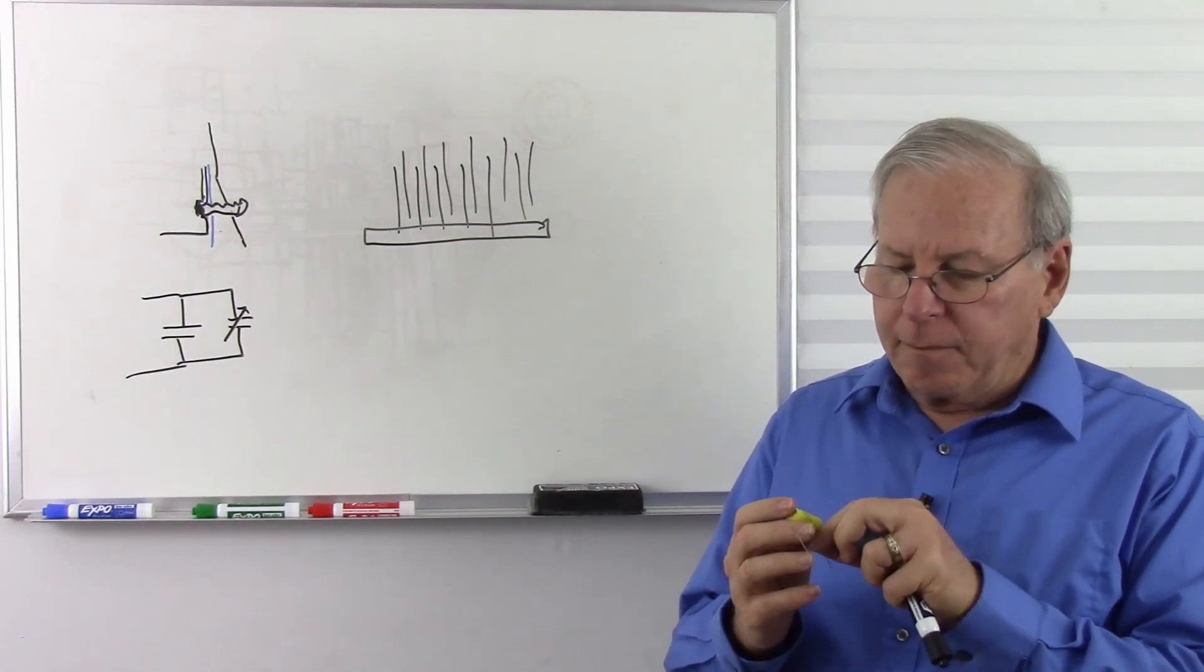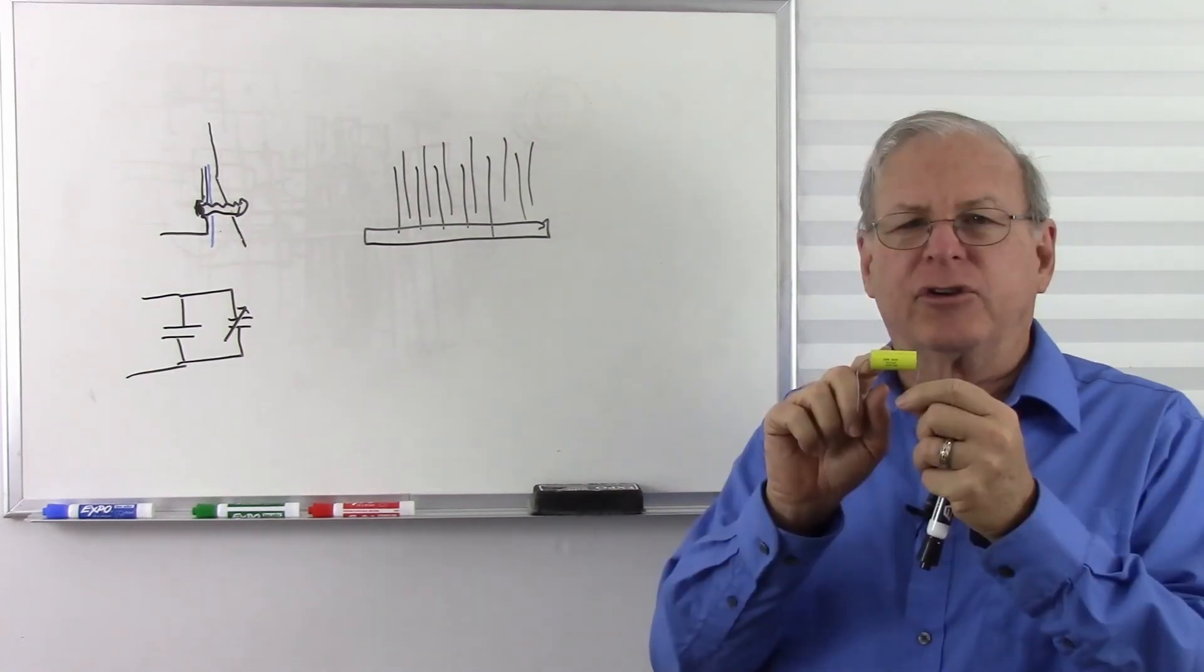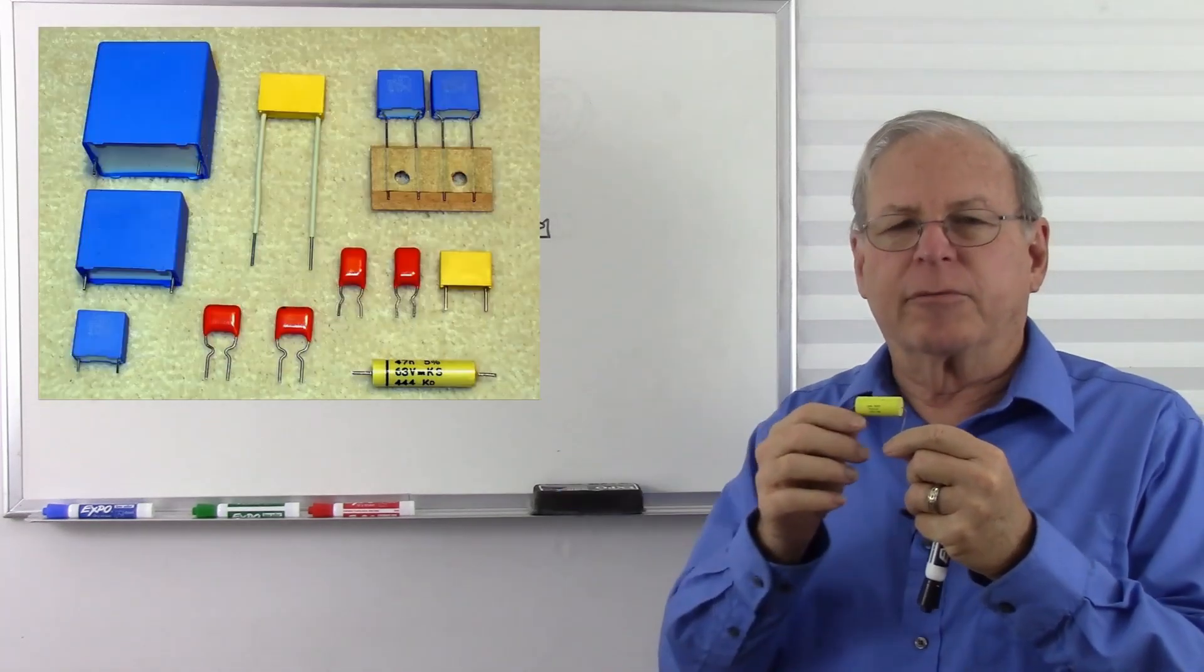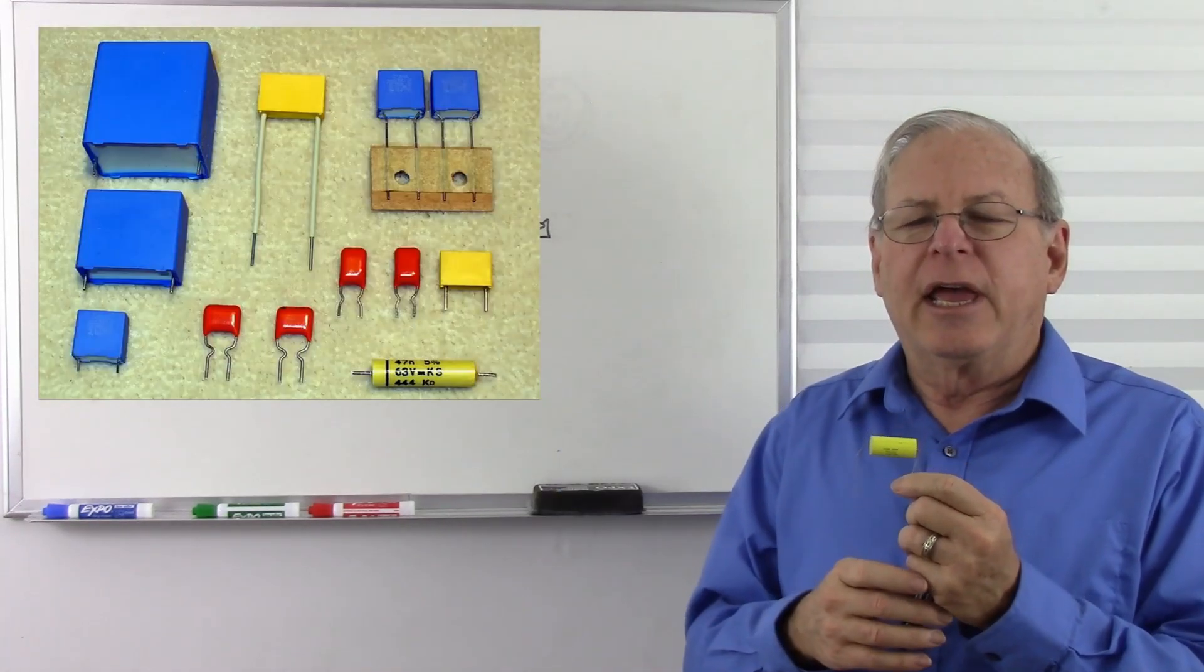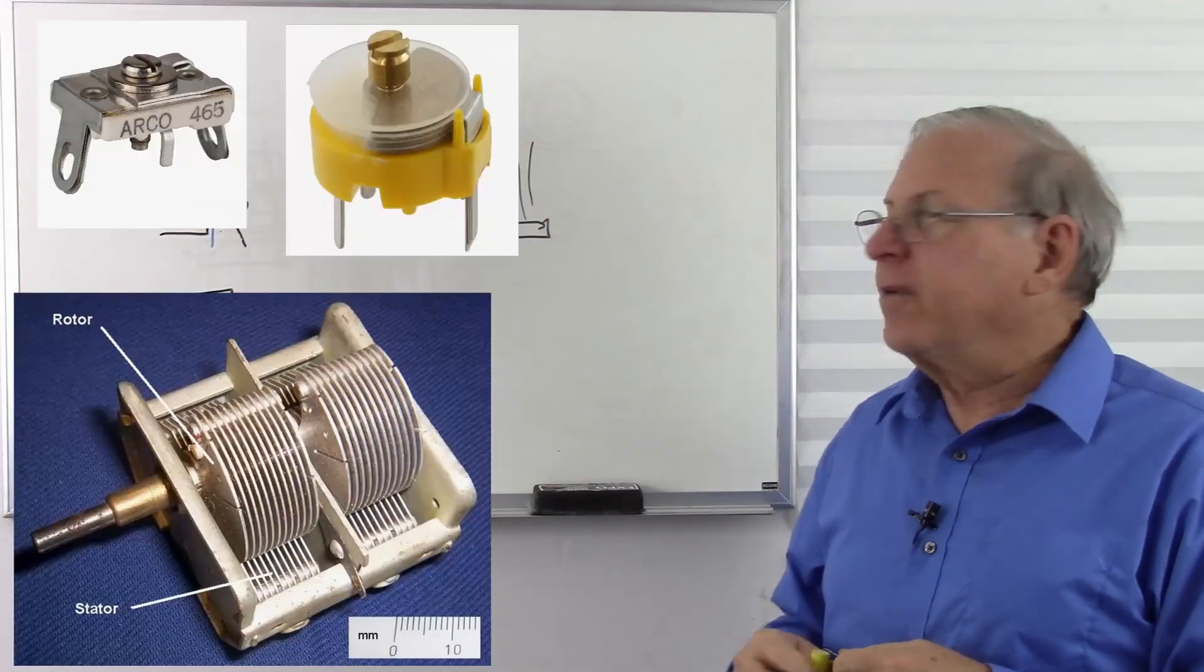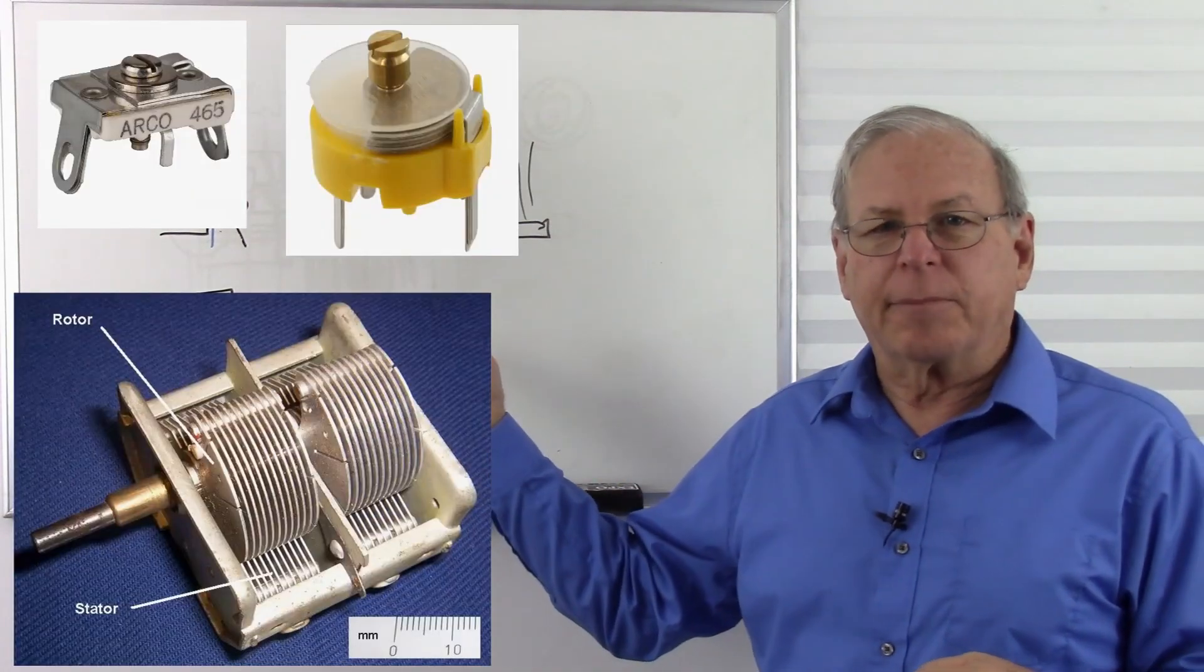This is a plastic film capacitor that I showed in the previous video. Here's a picture of some other plastic film capacitors. And finally, we have the variable capacitor that I have a couple of examples here.